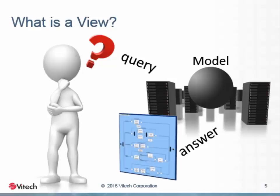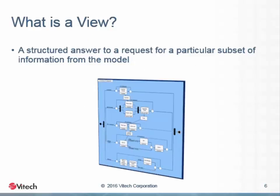The database would assemble the requested information and display it according to the rules or conventions that define how an activity diagram is to be displayed. An audience familiar with the meaning of the activity diagram can then receive the information and understand it. Each view uses a formal notation so that the information contained there will always be understood in the same way. Because the information is being drawn directly from the database, every view is consistent and therefore every communication is consistent. In addition, every view is a real-time look at the data, so the views are not only consistent but up to date. That promotes communication and real-time collaboration.